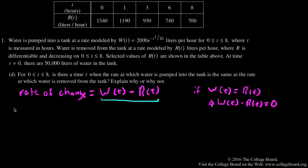So what we have here is w of 0 minus r of 0 is going to be 2000 minus 1340, which is going to be 660.